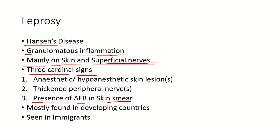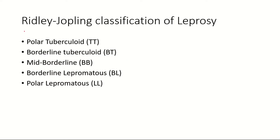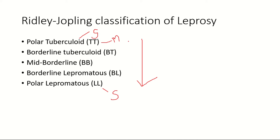This disease is mainly found in developing countries and is not very common in countries like the United States. Under the Ridley-Jopling classification, leprosy is classified into five types: polar tuberculoid, borderline tuberculoid, mid-borderline, borderline lepromatous, and polar lepromatous. As you go from top to bottom, the severity increases. Polar tuberculoid is the mildest form and polar lepromatous is the most severe, and the number of skin lesions also increases from top to bottom.